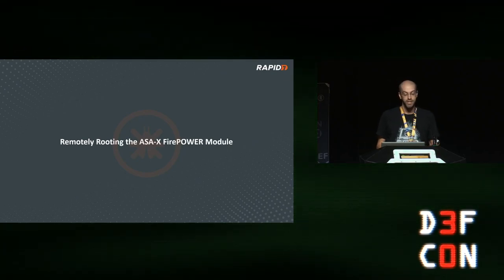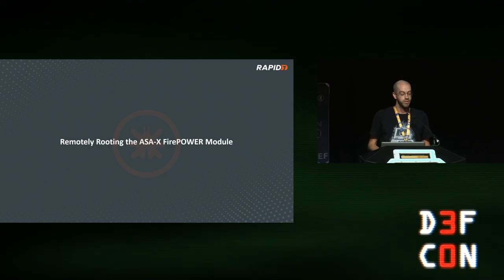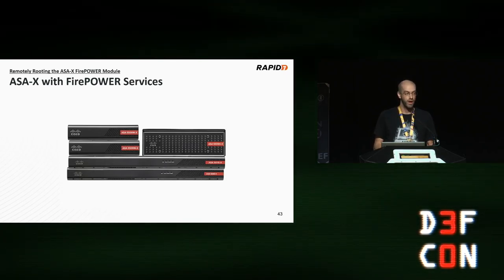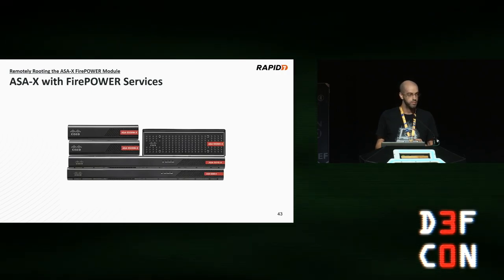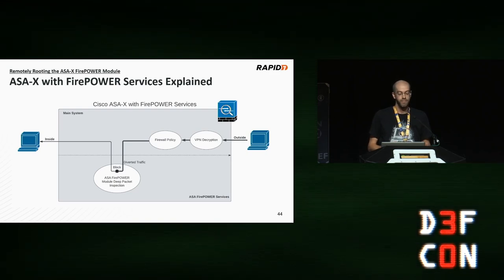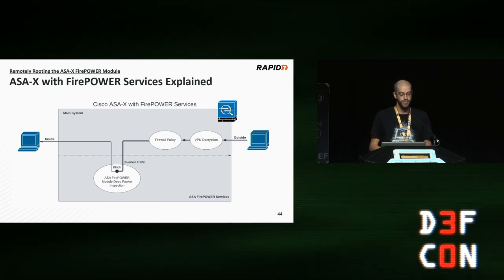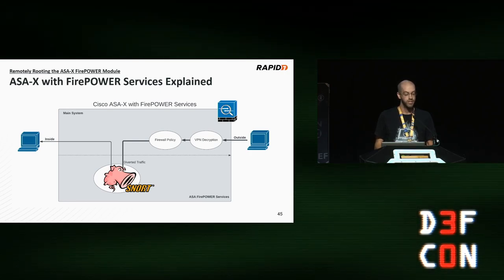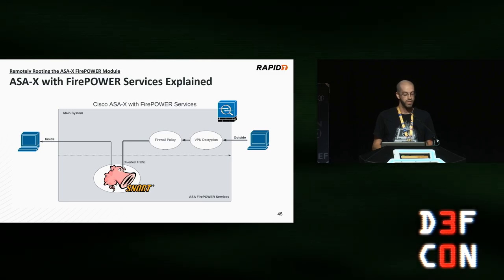That's it for ASDM hackery. The rest of this talk focuses on a particular model called ASA-X with Firepower Services. The name 'Firepower Services' describes a special feature: a virtual machine running Snort for deep packet inspection, essentially an IPS installed directly on the ASA. From the diagram, incoming traffic is diverted through this virtual machine for analysis.